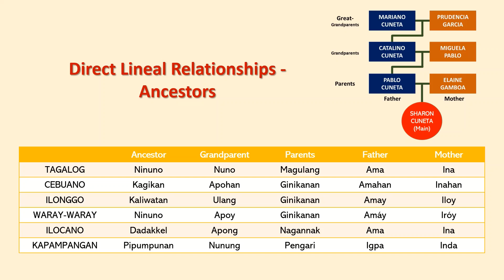In Tagalog, ancestor is Ninuno, while it is Kagikan in Cebuano. It is Kaliwatan in Ilonggo, Ninuno in Waray-Waray, Dadakel in Ilocano, and Tipumpunan in Kapampangan. Grandparent is Nuno in Tagalog, Apohan in Cebuano, Ulang in Ilonggo, Apoy in Waray-Waray, Apong in Ilocano, and Nunung in Kapampangan.